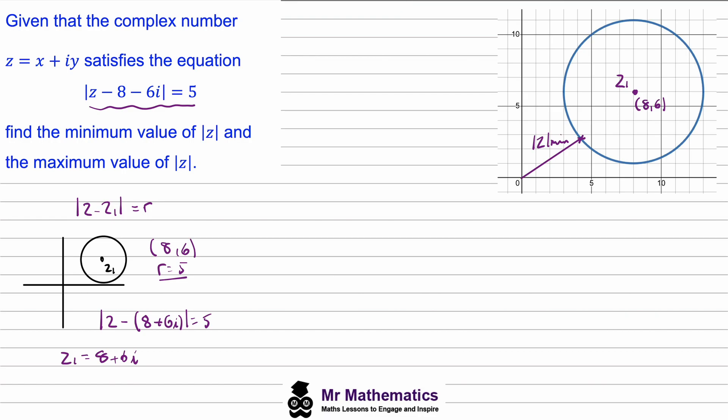Now the maximum possible magnitude of z again would come from the origin. It would pass through the center and it would be at this point. We'll call this magnitude of z max. Actually just to make this clearer, this minimum should actually fall at this point.